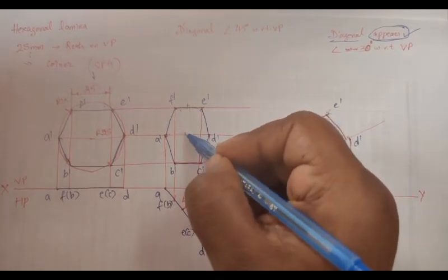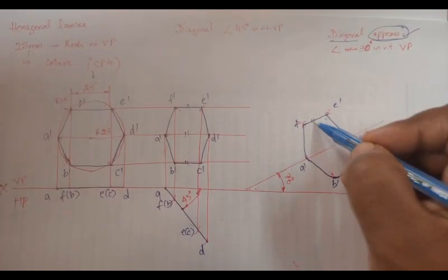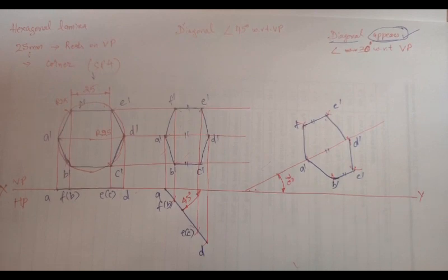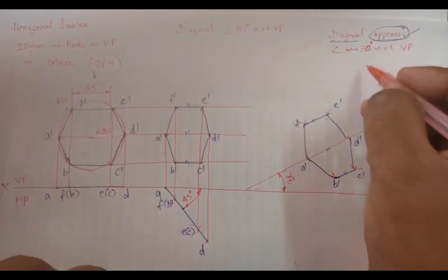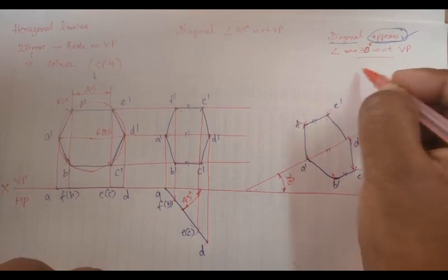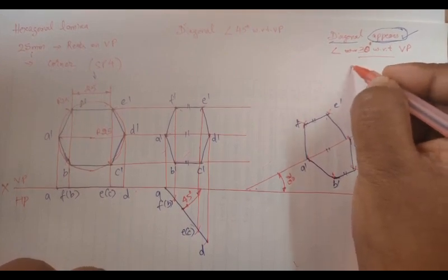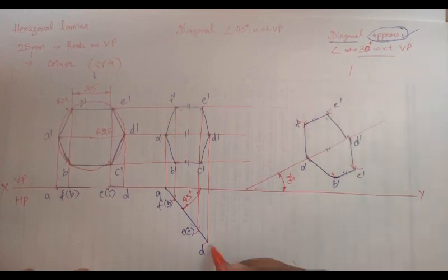Similarly, the third problem also, A dash D dash diagonal, which is inclined to 30 degrees. Similarly, E dash F dash should be parallel and should be inclined to 30 degrees. B dash C dash should also be inclined to 30 degrees and should be parallel to the diagonal. We are going to do the projections.